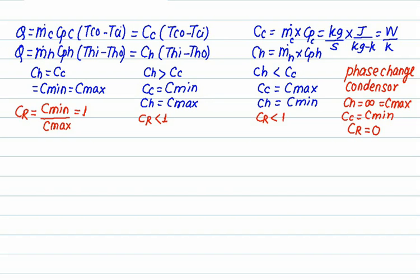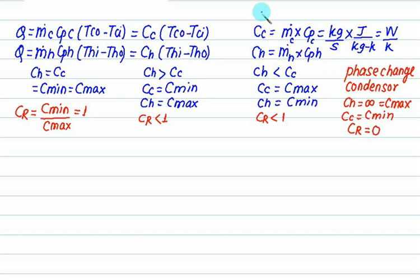The first relation is Q equals m-dot-c times Cpc times (Tco minus Tci). The product m-dot-c times Cpc is called Cc, with units of watts per kelvin. Similarly, Q equals m-dot-h times Cph times (Thi minus Tho), where m-dot-h times Cph is called Ch. Ch and Cc are called capacity rates.